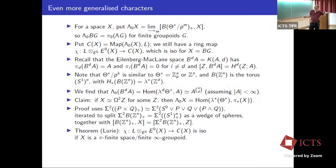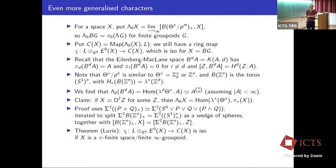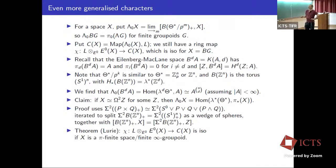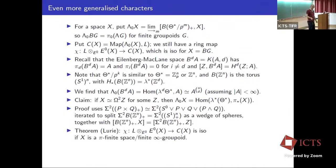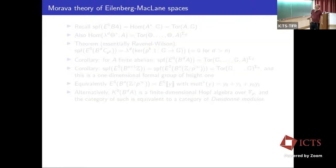There is a theorem of Lurie saying the character map χ is an isomorphism when X is a π-finite space (also called a finite infinity groupoid) — meaning every component has finitely many non-trivial homotopy groups, all individually finite. Part of the proof involves working up the Postnikov tower.